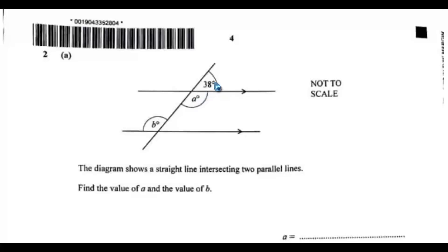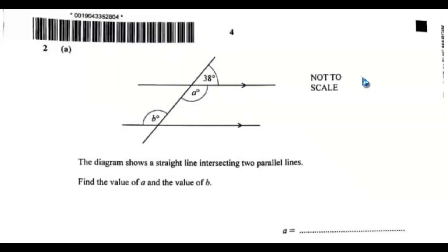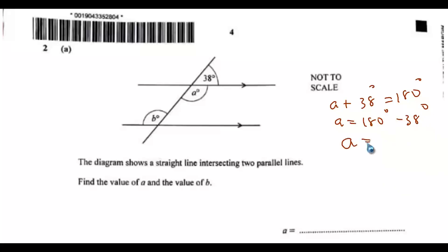These two angles are on a straight line — angle a and angle 38 degrees are on a straight line. Angles on a straight line add up to 180 degrees, so we can use that. So a + 38 = 180 degrees, which means a = 180 − 38 = 142 degrees.